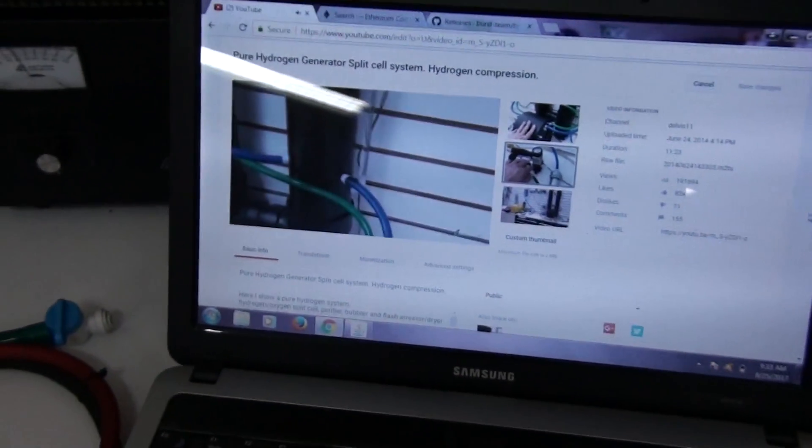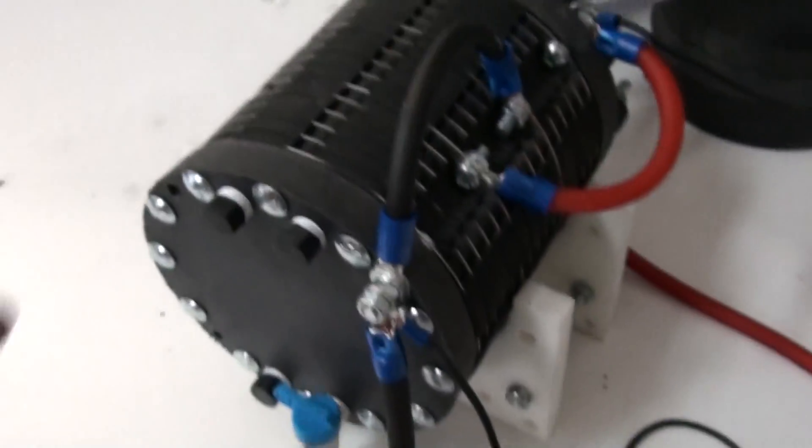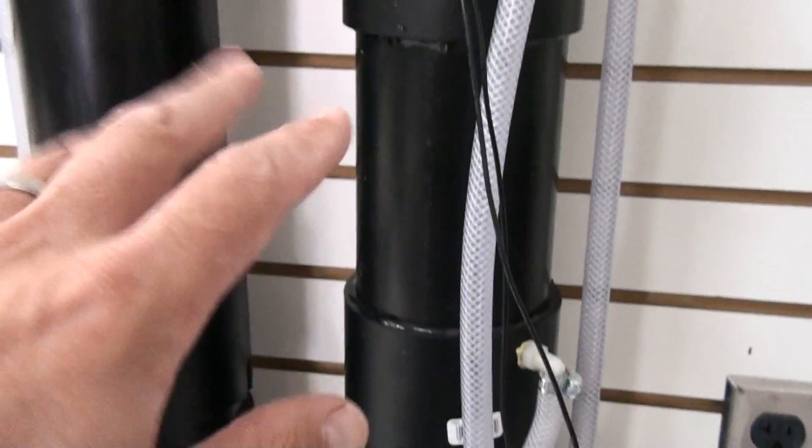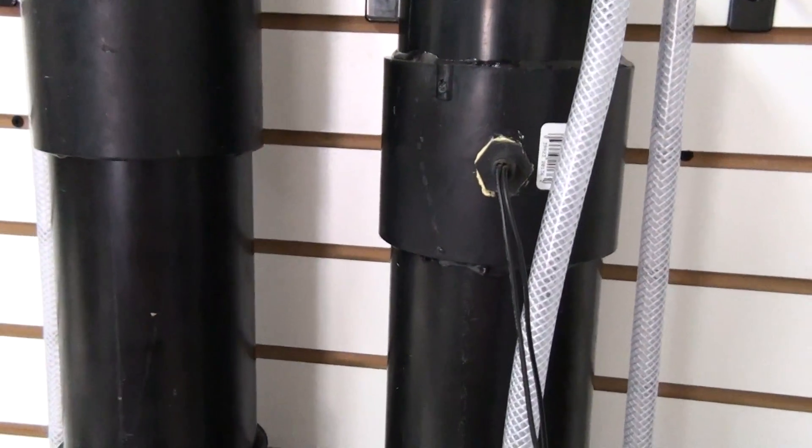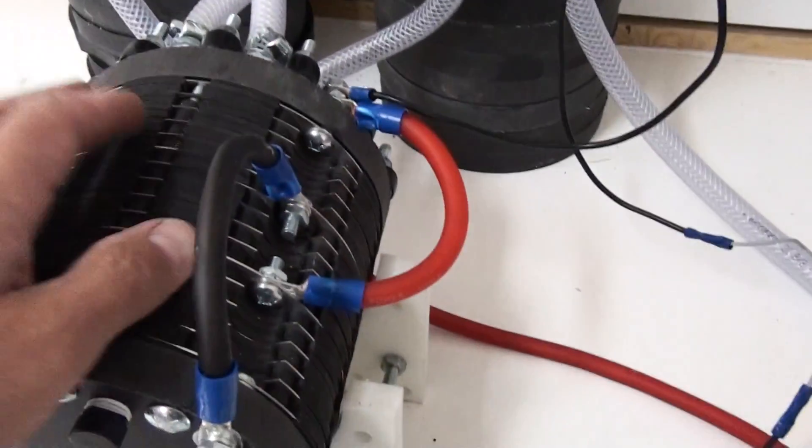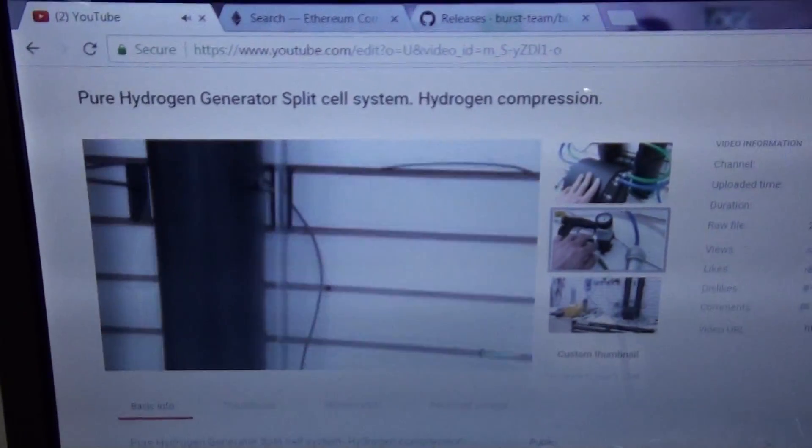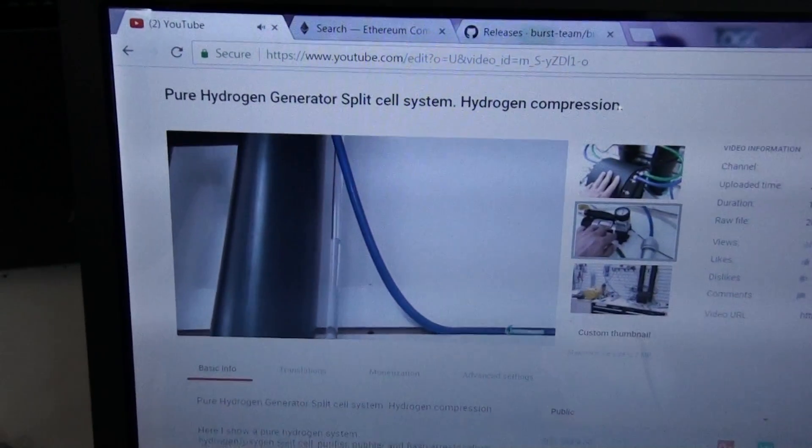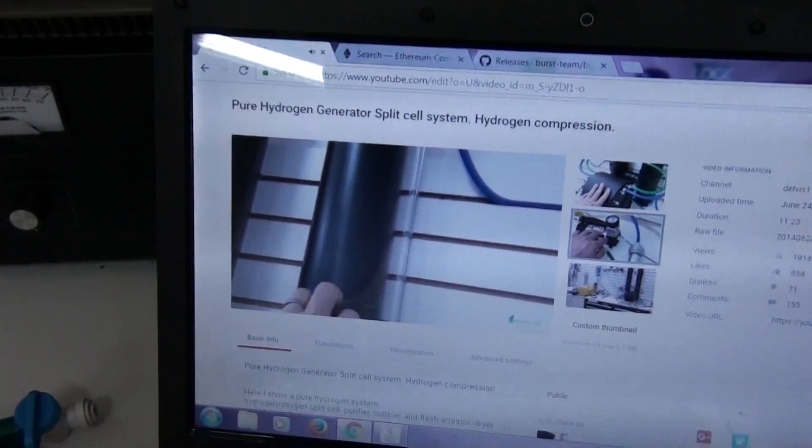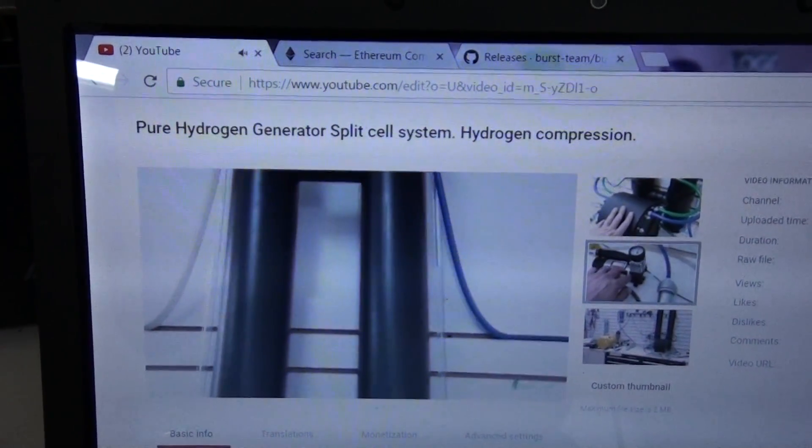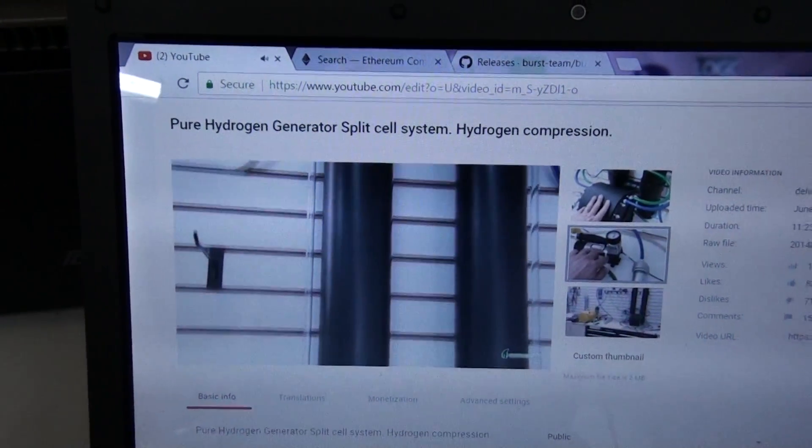That video will tell you about the hydrotube cell that we're using here and why we need to separate the tanks and the gases and how we need to control the water level. This video will tell you how that works. So if you don't understand what's going on here, just view this video and you'll kind of get what's going on.